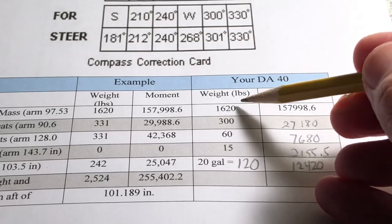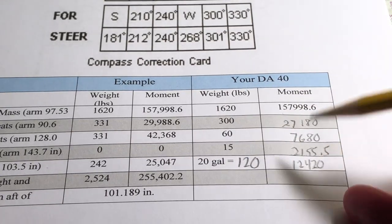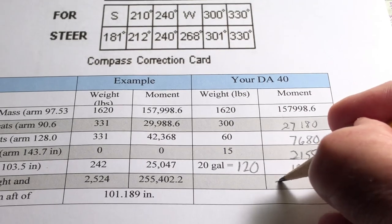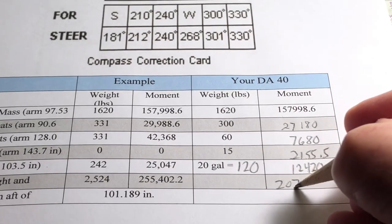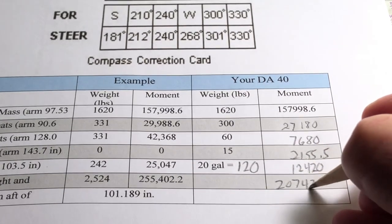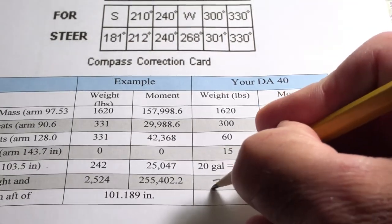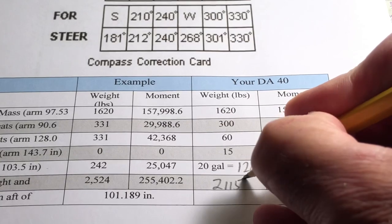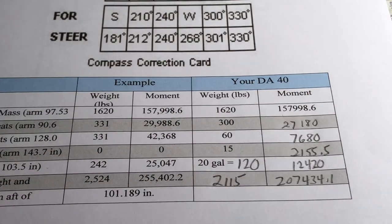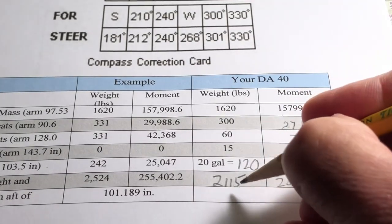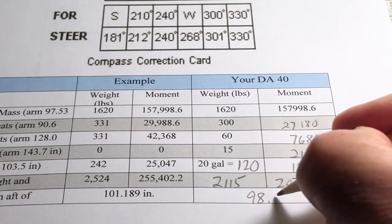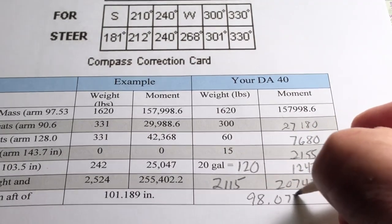Now all I have to do is add up the weight, add up the moment. So the total moment is 207,434.1. The total weight is 2,115 pounds. I divide the total moment by the total weight and the CG is 98.077.